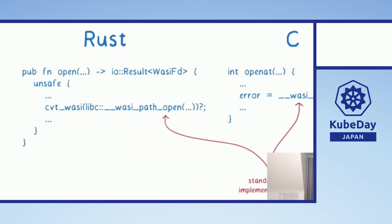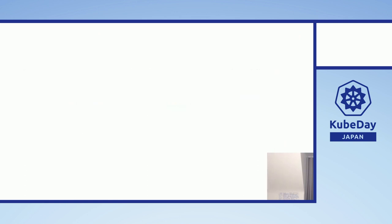What WASI does is provide programming-language-independent methods for system calls. C and Rust might have very different ways of doing system calls, but with WASI, instead of using C or Rust's native approach, you just use WASI. When you compile this down to WebAssembly, you can run that WebAssembly wherever you want — on whatever WASM runtime you use, you can run it even on the server. This becomes important when running WASM outside the web, because you're no longer tied to a particular kind of system call standard — you just use WASI.